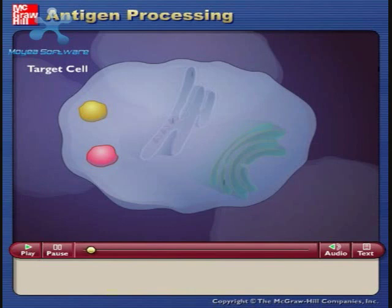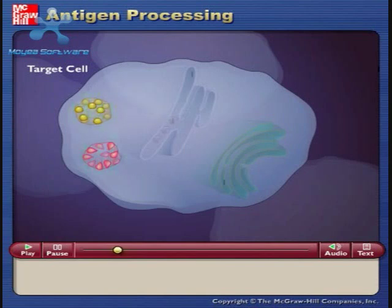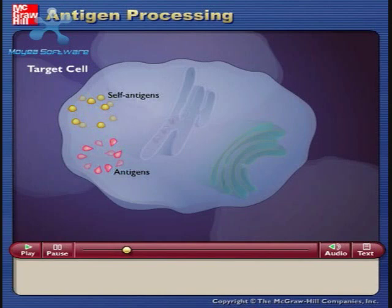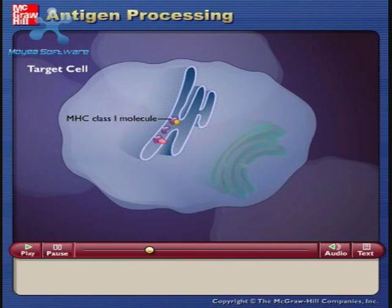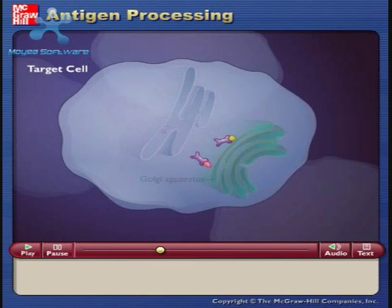Antigens are processed differently depending on whether they originate within or outside the cell. Proteins produced within the cell, such as viruses or self-proteins, are broken down into fragments. Fragments of foreign proteins are antigens. The antigens are then transported into the rough endoplasmic reticulum, where they combine with class 1 MHC molecules. The combination is then transported to the Golgi apparatus and from there to the plasma membrane.